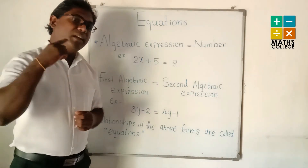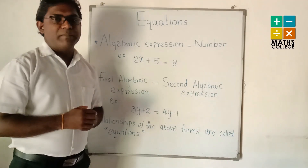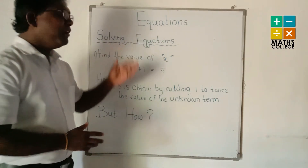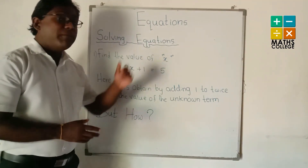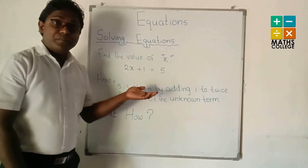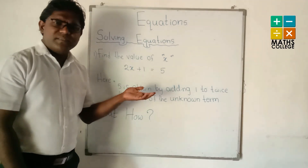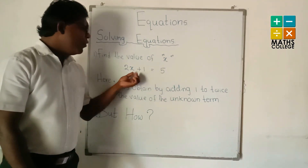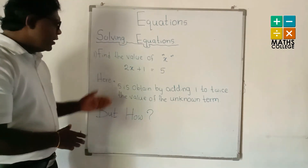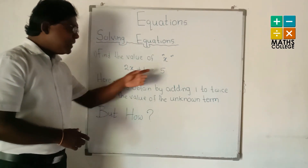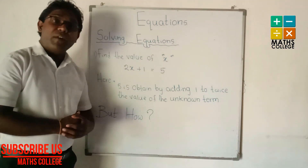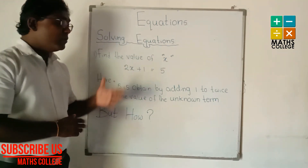Now we go to another step: how to solve an Equation and find the value of x. For example, 2x + 1 = 5. Find the value of x — that means we have to find the value of the unknown term x. The 5 is obtained by adding 1 to twice the value of the unknown term.